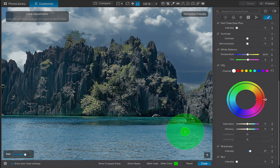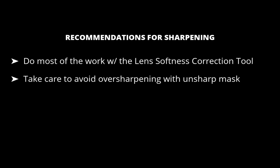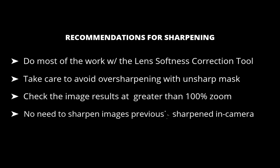So that was the unsharp mask. Before we go to a comparison of the sharpening results, let's run through a few recommendations. First, DxO recommends doing most of your sharpening with the lens softness correction tool before the unsharp mask. When using the unsharp mask, take care to avoid over-sharpening — it is more prone to artifacts such as noise, halos, and jagged edges. Make sure to check the image at 100% zoom. Third, DxO recommends not increasing the sharpness of a shot already sharpened by the camera, as in the case for JPEG images. If you intend to post-process your image, you should shoot without in-camera sharpening.